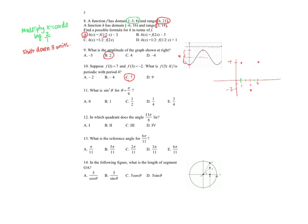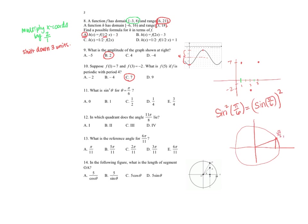Number eleven: what is sine squared of theta when theta equals pi over 6? Sine squared of pi over 6 equals (sine of pi over 6) squared. Using the unit circle, pi over 6 has X coordinate root 3 over 2 and Y coordinate one half. Since sine is the Y coordinate, sine of pi over 6 equals one half. So sine squared of pi over 6 equals (one half) squared, which is one fourth. The correct answer is D.